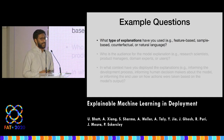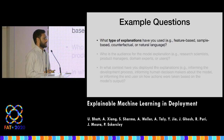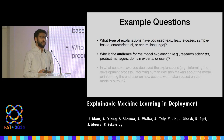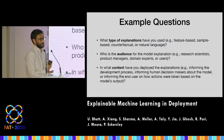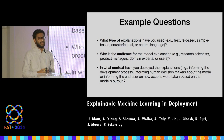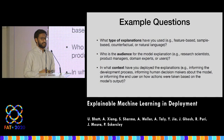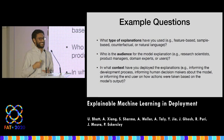The example questions we asked included: what types of explanations were you using — natural language explanations, feature importance explanations, sample importance, and so on. Who's the audience of this explanation — is it a research scientist, product manager, domain expert? And most importantly: in what context have you actually deployed this explanation? Is it informing the development process, being used as justification, or being used to help domain experts?